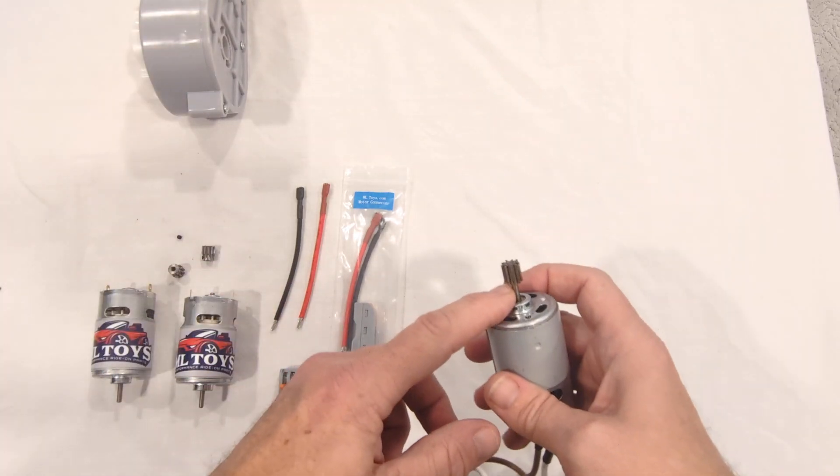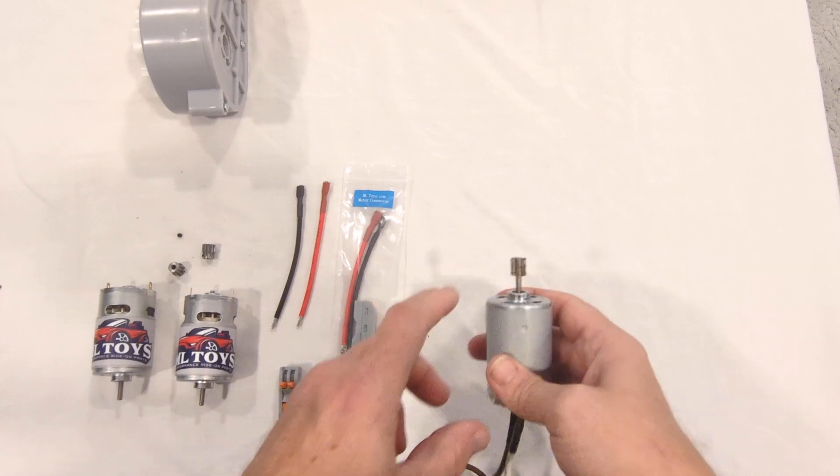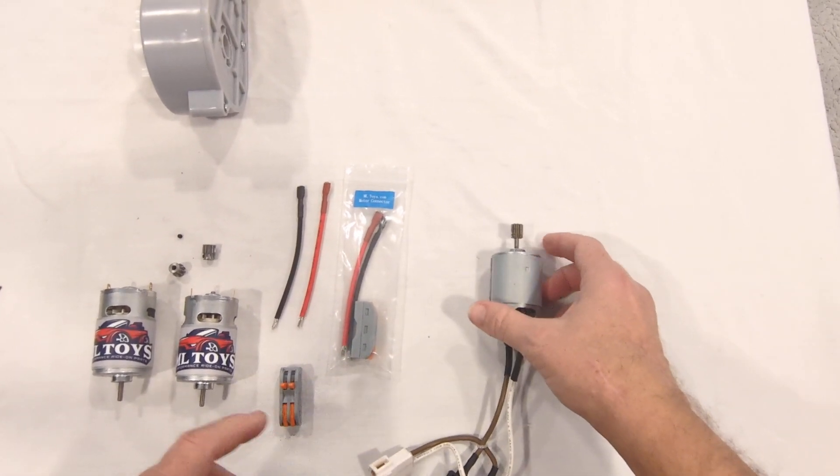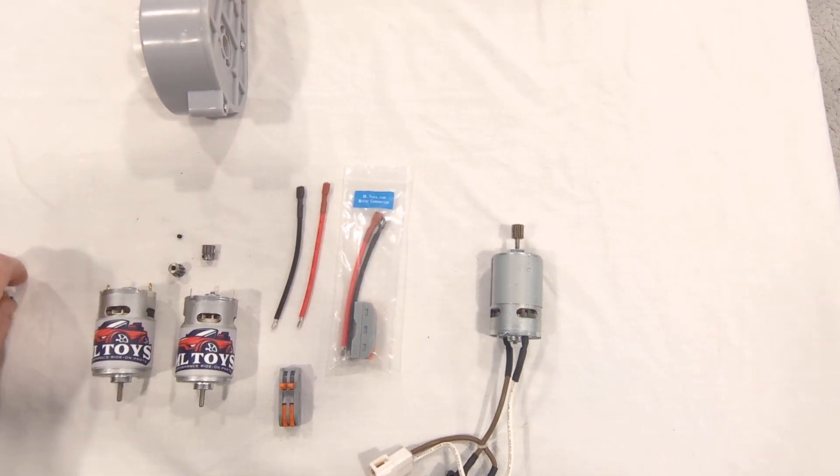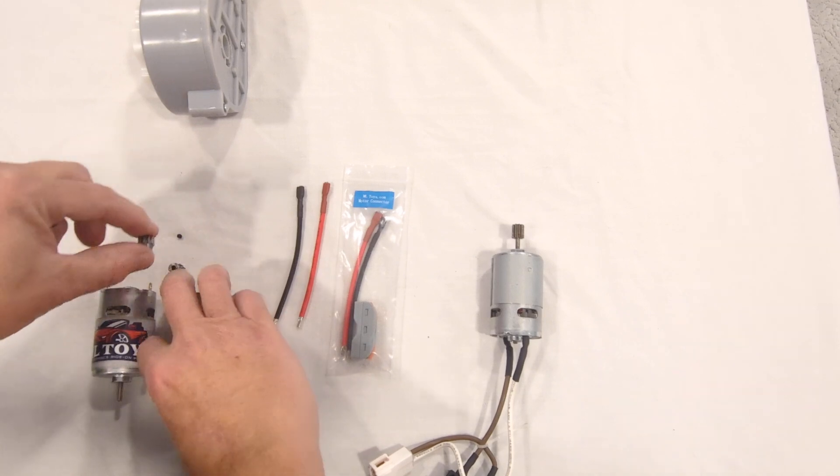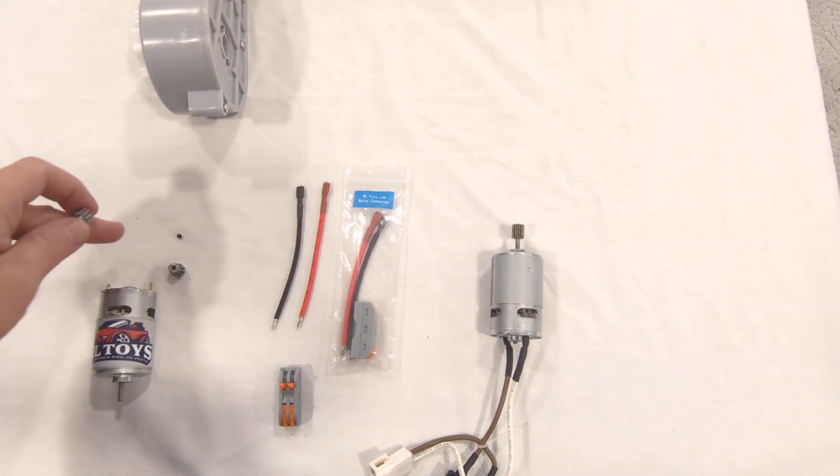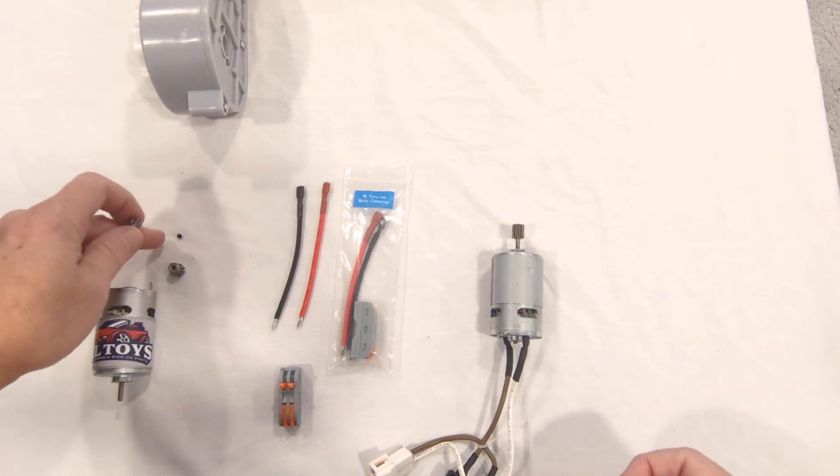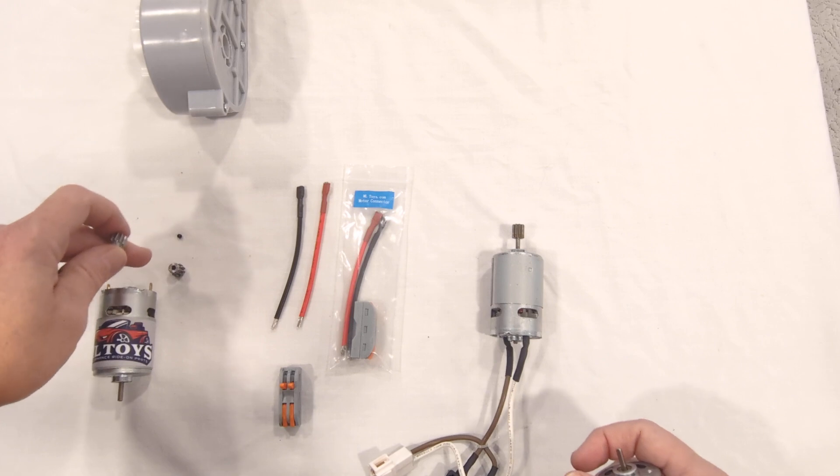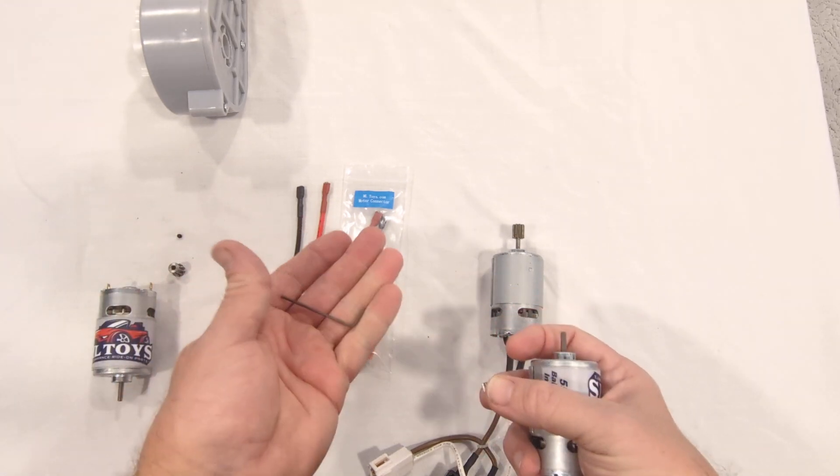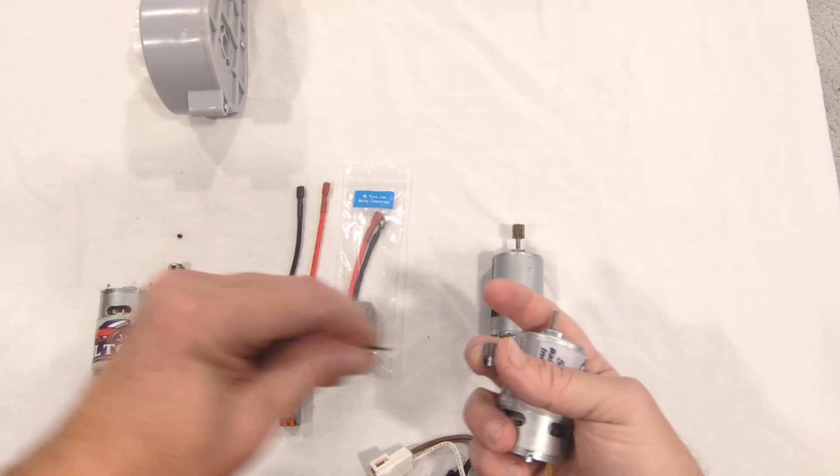You'll notice the pinion gear that comes on this motor is press fit on. We can't reuse that one. Our motors, you can change pinion gears if you ever change what vehicle you use them in. So you use a one millimeter allen key, which I have one right here, and put the set screw in.